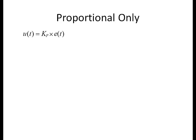For a proportional only controller, the equation becomes output equals gain times error. I prefer to use pseudocode to better illustrate how these controllers work than trying to fight through the math. First, the error is simply the set point minus the process value — how far you are from where you want to be. The output is then this error times the factor K, which is commonly called gain.